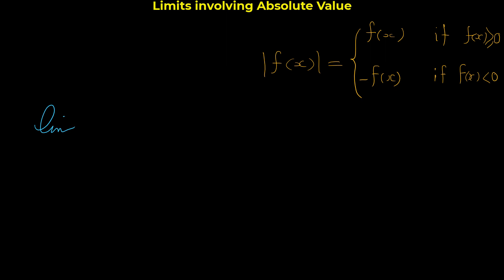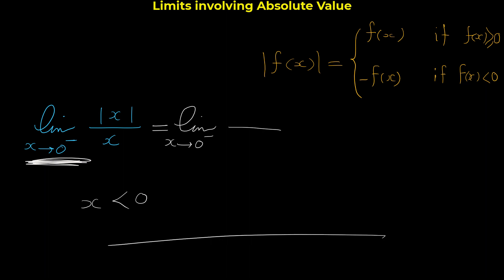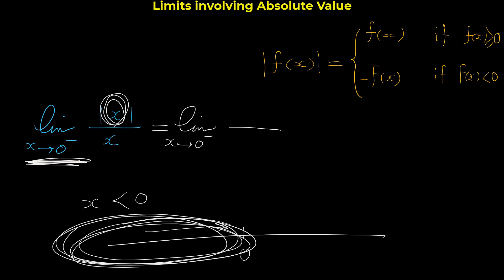Now let me show you another example: the limit of |x|/x as x approaches 0 from the left. This is again a one-sided limit. Because x approaches 0 from the left, x is a number close to 0 but less than 0.